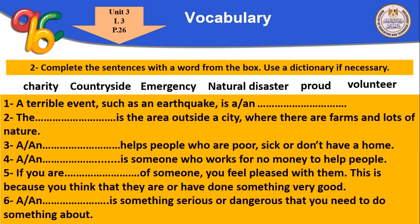Now, complete the sentences with a word from lesson three, page 26. Use a dictionary if necessary. We have the words: charity, countryside, emergency, natural disaster, proud, and volunteer. First sentence: a terrible event such as an earthquake is called a natural disaster.